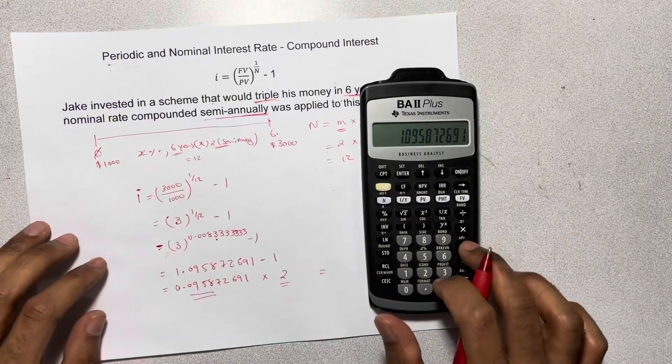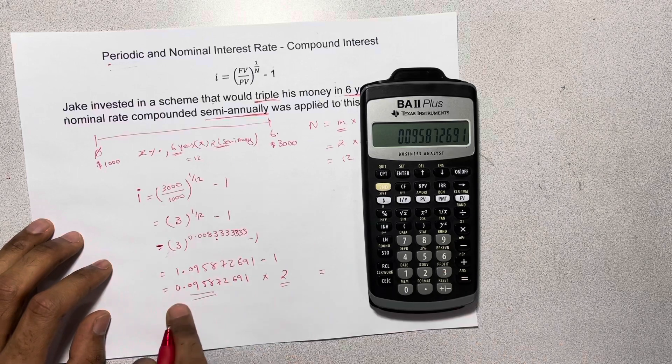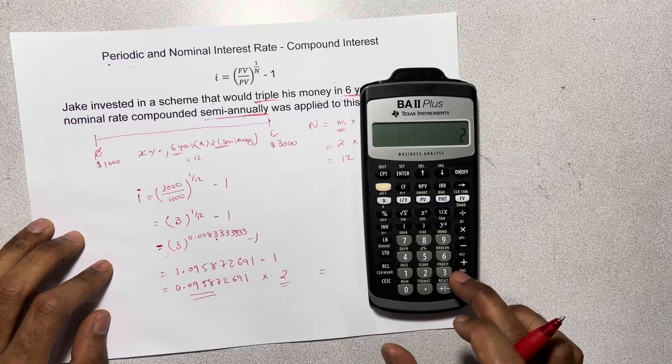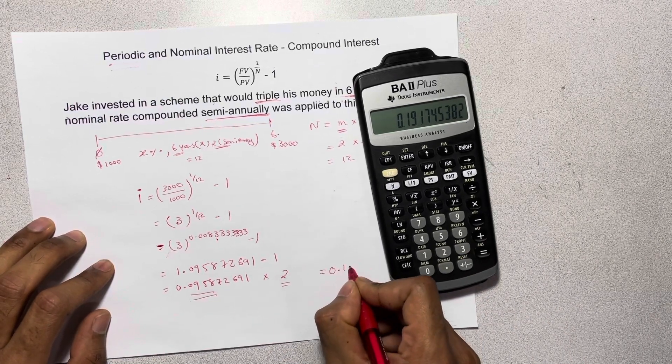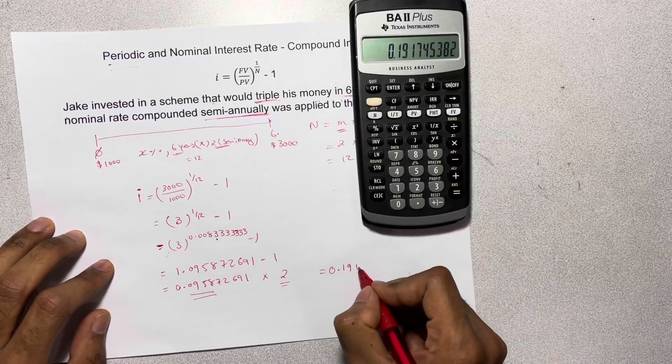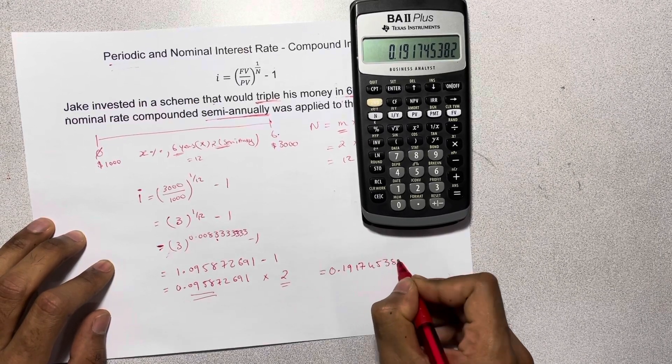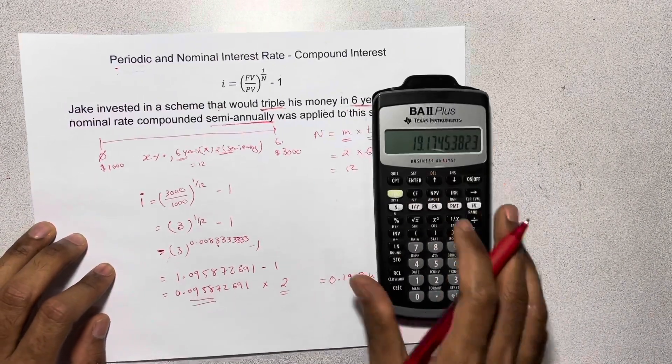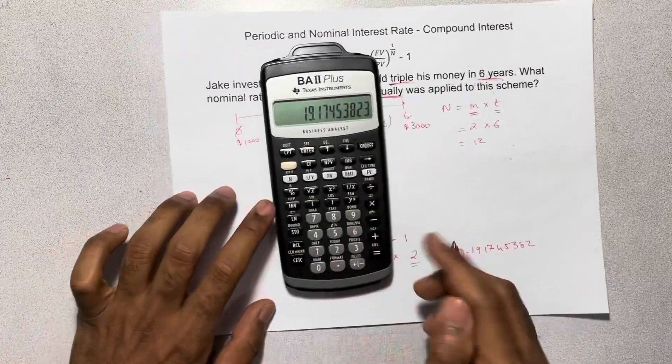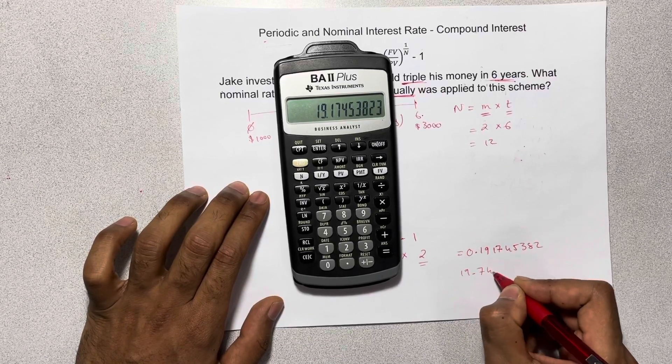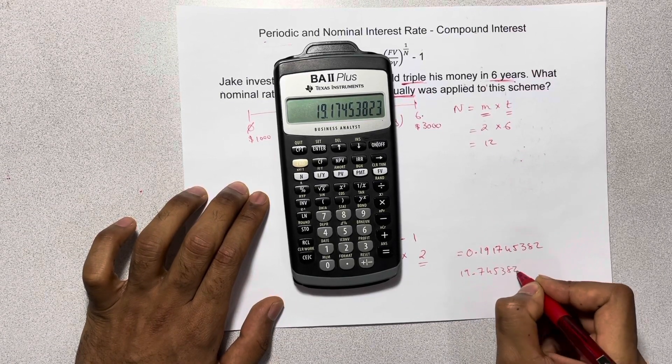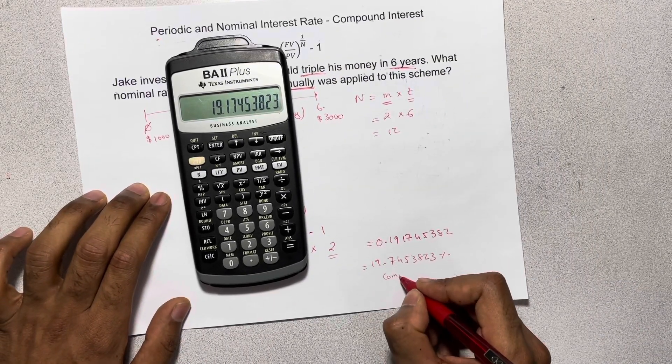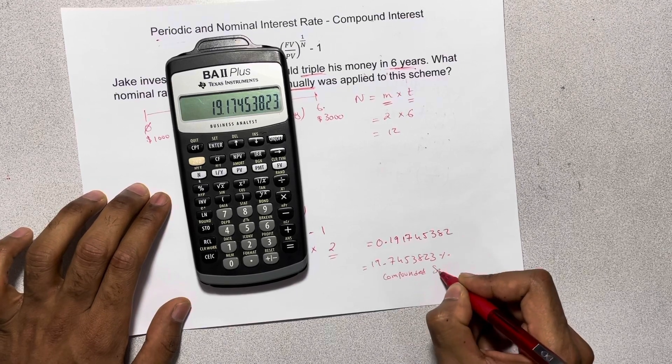So then again, I'll just subtract 1 from here. So we get 0.09 and we multiply that by 2, and we get 0.191745382. So times that by 100 because it's a percentage, and we get 19.7453823% compounded semi-annually.